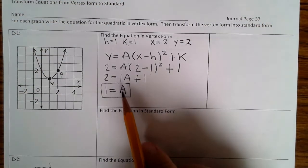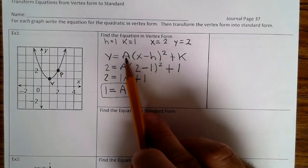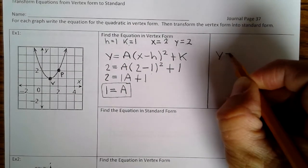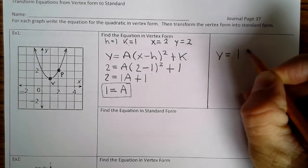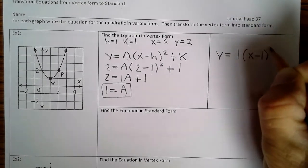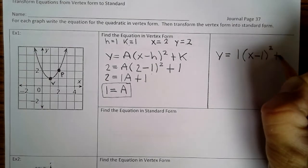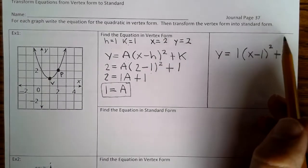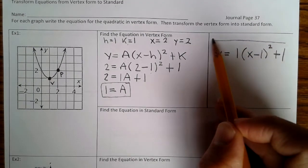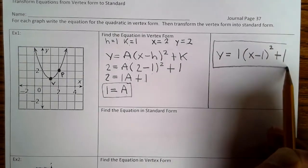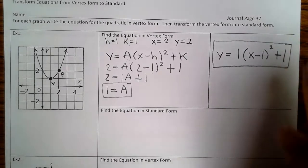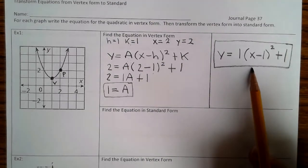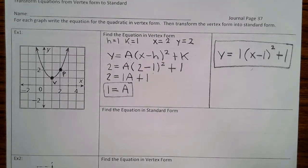Now that we have the A value, we're going to substitute that into the equation along with h and k. So our equation in vertex form is y equals 1 parentheses x minus 1 squared plus 1. Now we're going to take this equation and convert it to standard form.